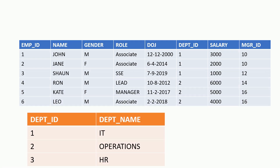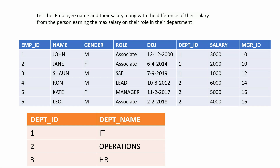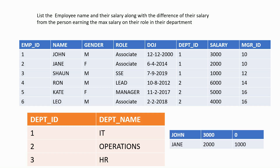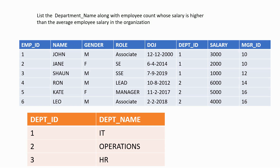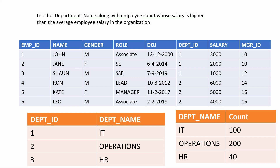In the eleventh question, we need to list the employee name and salary along with the difference of their salary compared to the person earning the maximum salary in their department for their role. For example, since John earns the maximum salary as an associate in the IT department, his difference is zero, and because Jane earns a thousand less than John, that should be reflected as the difference. In the twelfth question, we need to display the department name along with the count of those employees who earn more than the average employee salary in the organization.